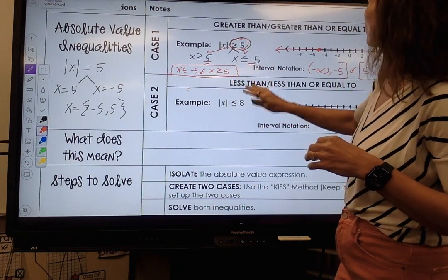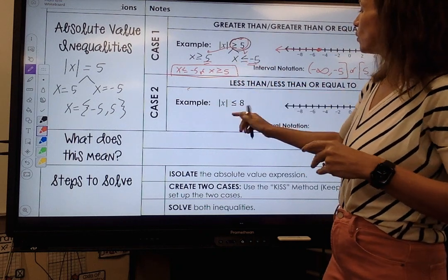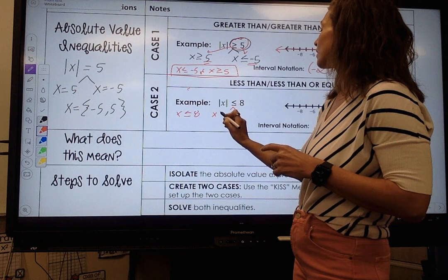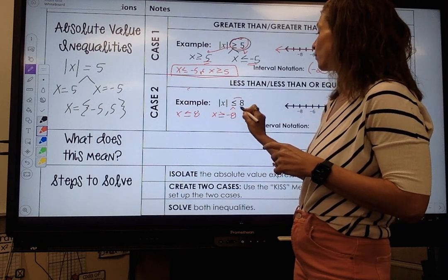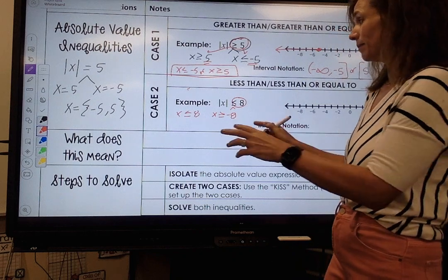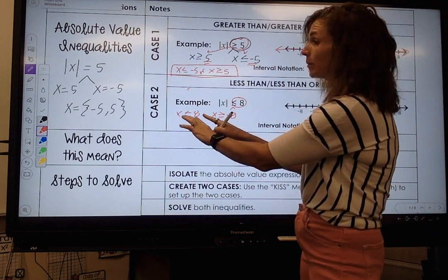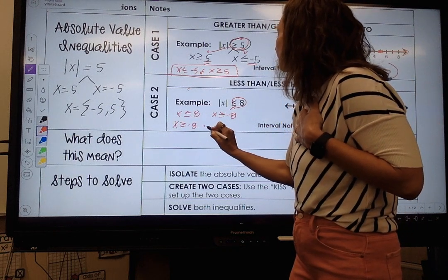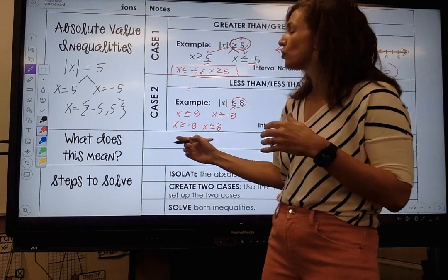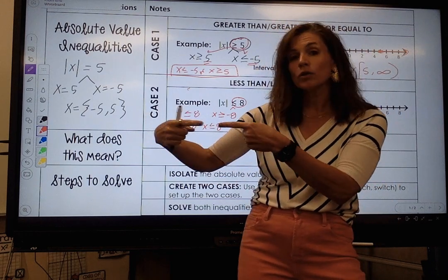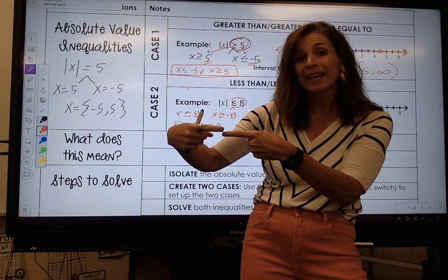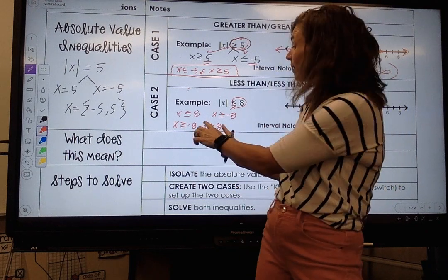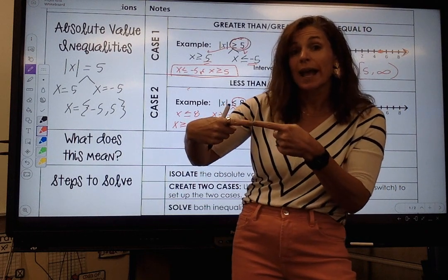Let's look at case 2. The absolute value of x is less than or equal to 8, and when I branch I get x is greater than or equal to negative 8. Remember, you flip your sign and your number. My target numbers are not lined up least to greatest, so I rearrange to get x is greater than or equal to negative 8 and x is less than or equal to 8. Notice my arrows point in toward each other, so that tells me it's an AND statement.